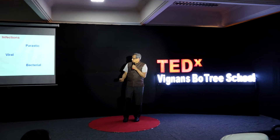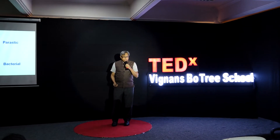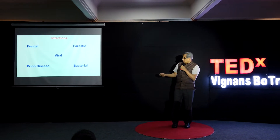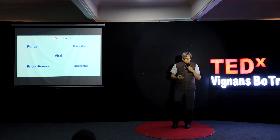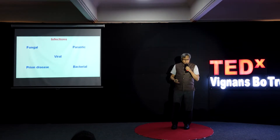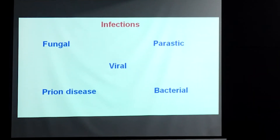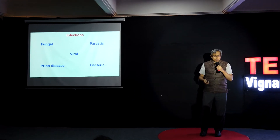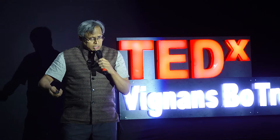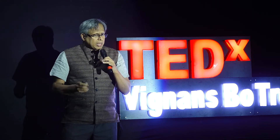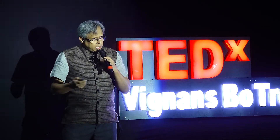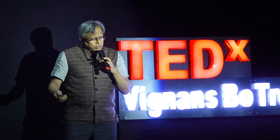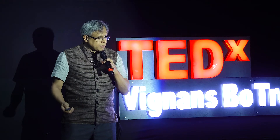So where do we get infections from? The kinds of infections we face can be all the way from fungal, parasitic like malaria, viral infections, prion disease, and even bacterial diseases. We all know about bacterial and viral diseases a lot more than others, but malaria is caused by a parasite. I would focus more on bacterial and viral diseases simply because pandemics are caused by these.